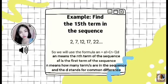So we will use the formula: a sub n is equal to a sub 1 plus the quantity of n minus 1 times the common difference. A sub n means the nth term of the sequence. A sub 1 is the first term of the sequence. N means how many terms are in the sequence. And d stands for common difference.